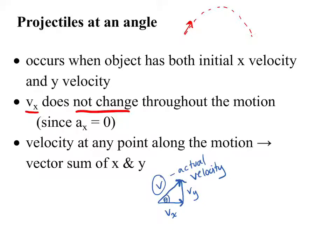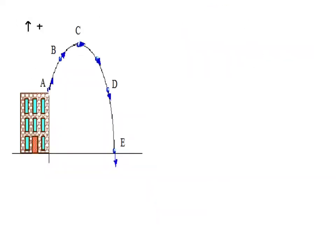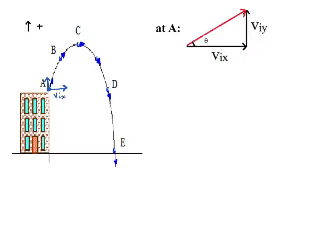The actual velocity will always be at some certain angle, so we'll always need to find the angle at which it is above the horizontal. Let's go through what exactly is happening at each point. At point A, we have some horizontal velocity Vx, and it also has vertical velocity because that's what it's been given. Moving the vertical vector over, here's my initial velocity in the x direction and my initial velocity in the y direction. To find the actual velocity, I can use Pythagoras to find the hypotenuse.